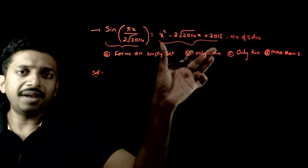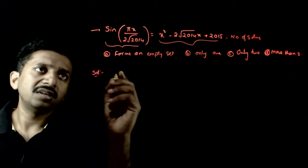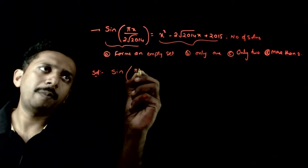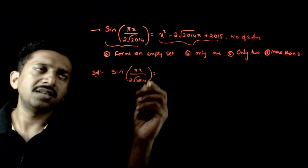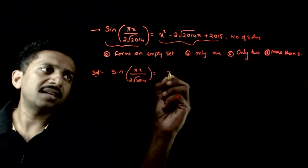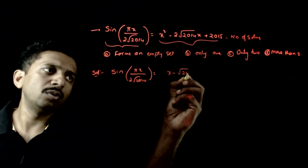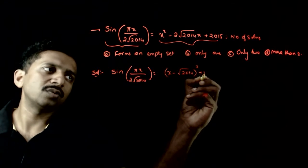We have to analyze the values of this. So sin of (πx)/(2√2014) is equal to (x - √2014)² + 1.